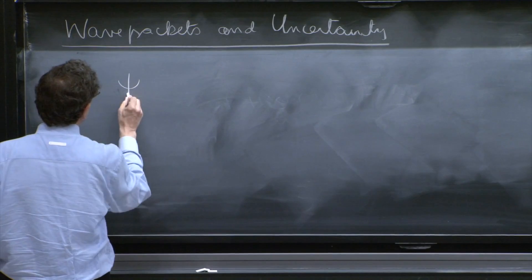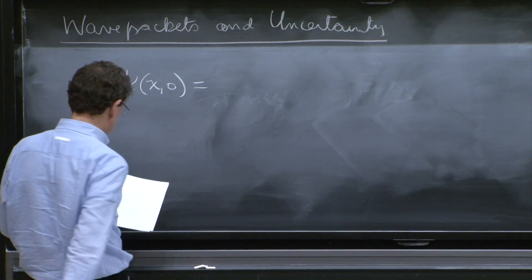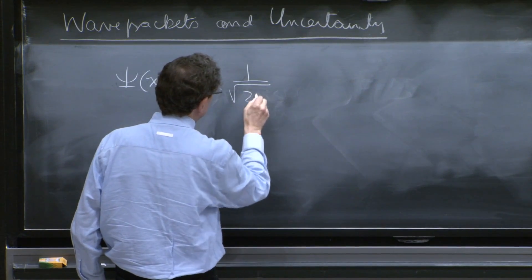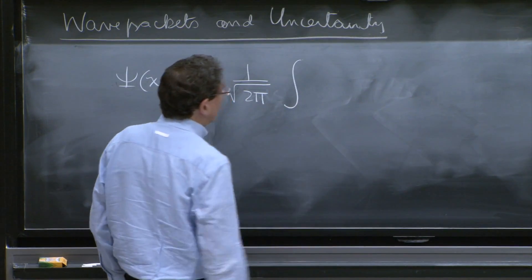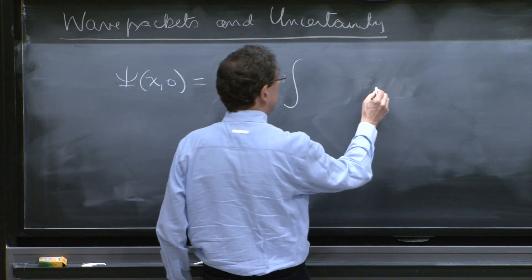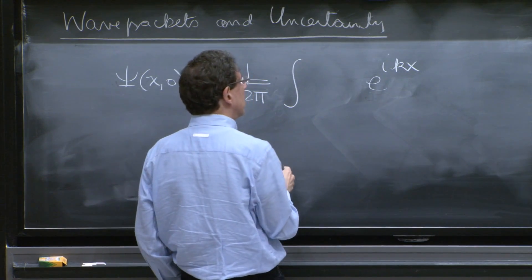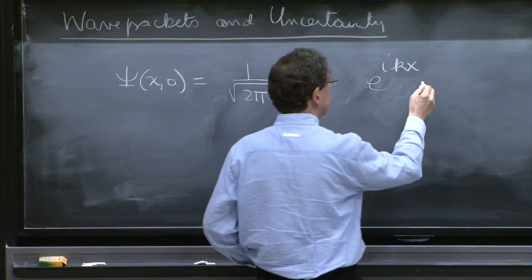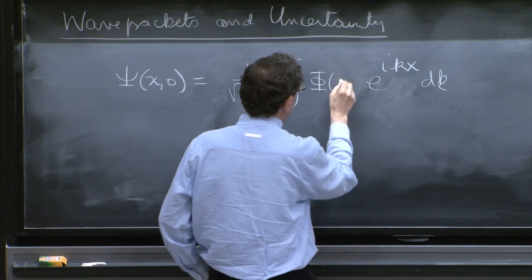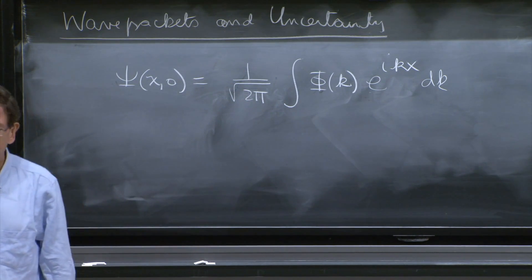And I'll write a particular wave function that you may have at t equals 0. And it's a superposition of plane waves. So it would be e to the ikx. You sum over many of them, so you're going to sum over k. But you're going to do it with a weight, and that's φ(k).